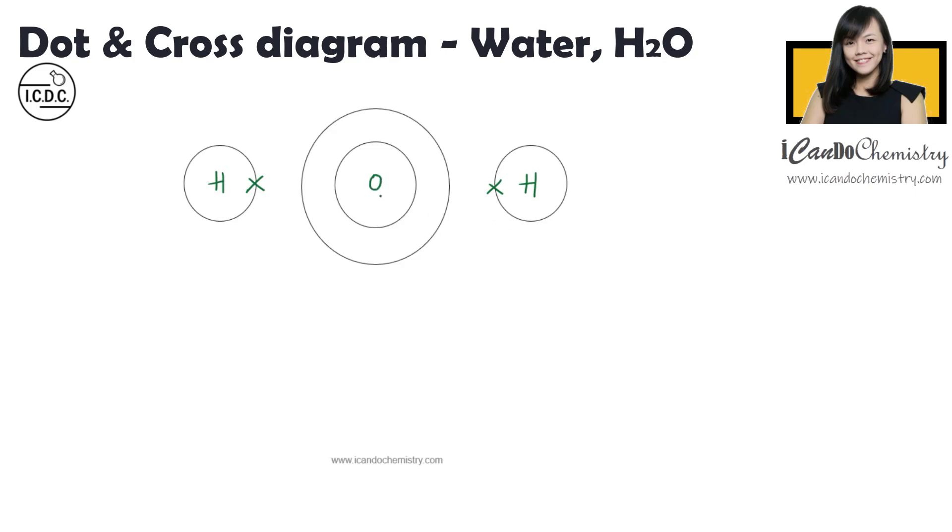So each of the hydrogen has one electron. Oxygen has eight electrons, alright? Two electrons are in the first shell. The second shell has six electrons.